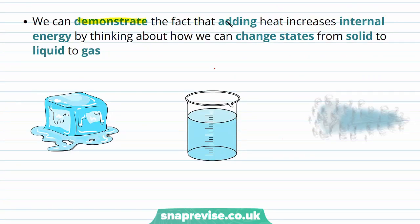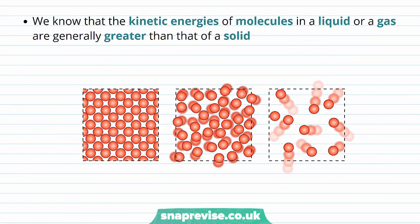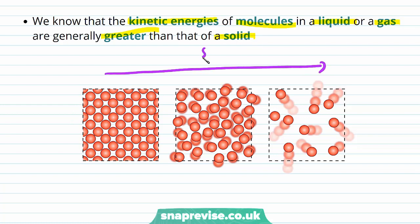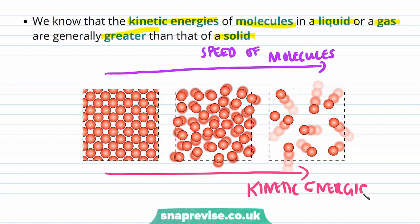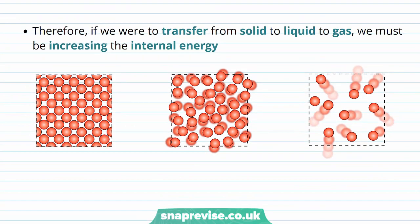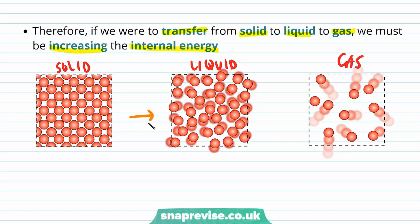We can demonstrate that adding heat energy increases internal energy by thinking about how we can change states from solid to liquid to gas. Here are the three states of matter for water. The kinetic energies of molecules in a liquid or a gas are generally greater than that of a solid. So as we move from solid to liquid to gas, the speed of the molecules increases and so do the kinetic energies. Therefore, if we transfer from solid to liquid to gas, we must be increasing the internal energy. Changing from solid to liquid or from liquid to gas means we've added internal energy.